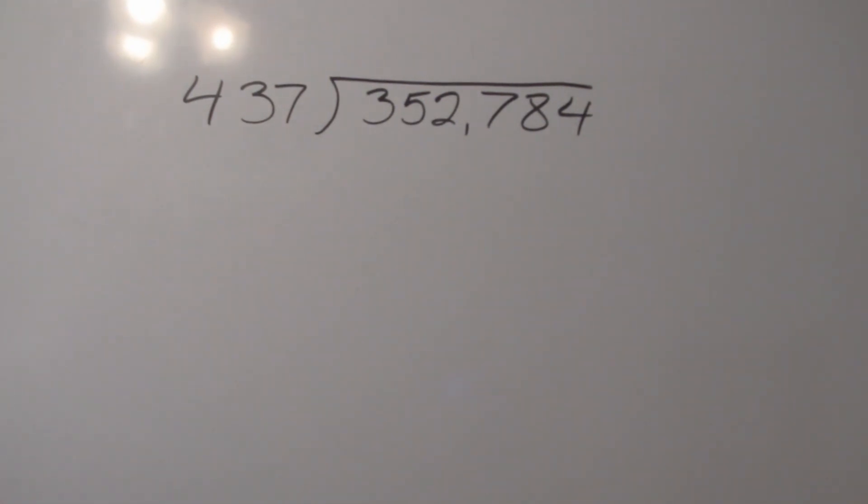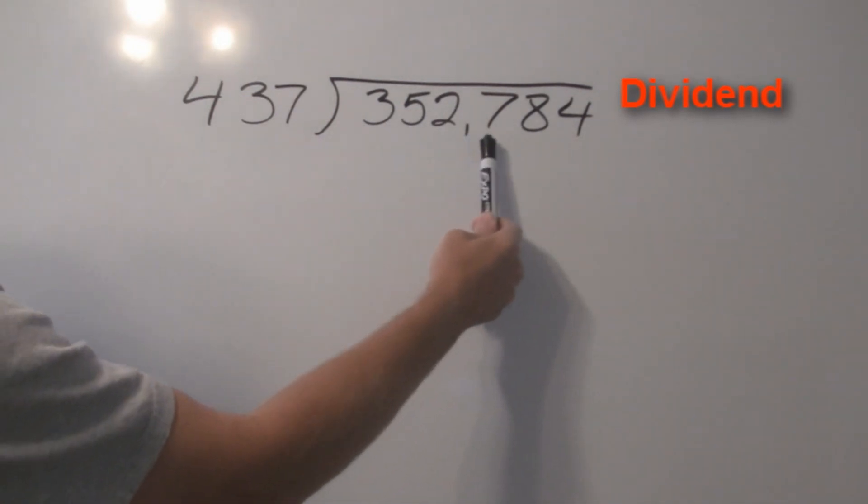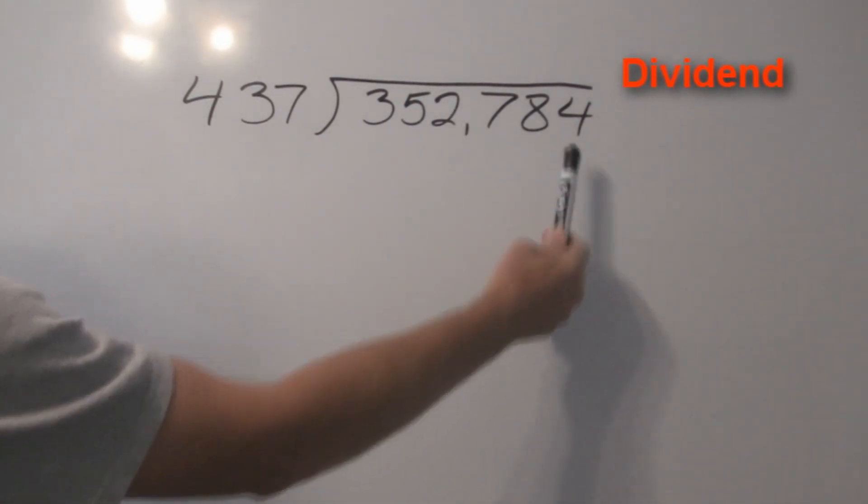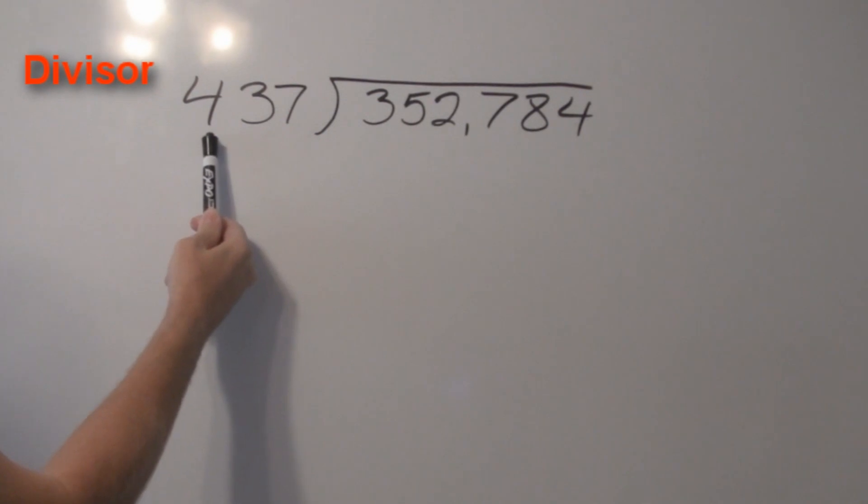What we are going to do is we are going to work this problem together step by step. Division is a funny thing in that it takes trial and error. So, let's get to our problem. We have 352,784 divided by 437. We are trying to find the quotient. We are trying to find the answer.